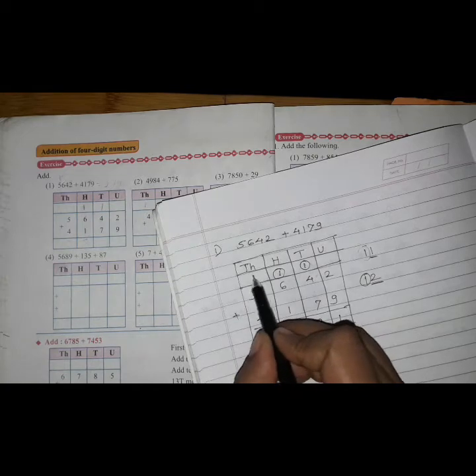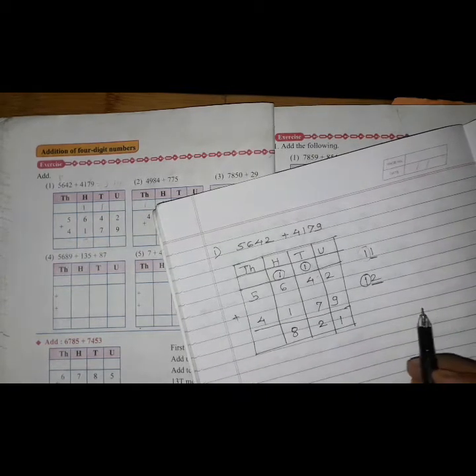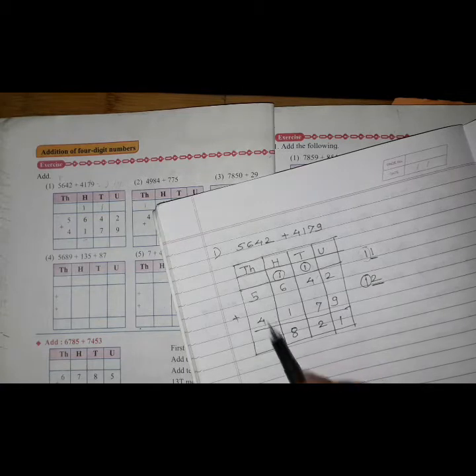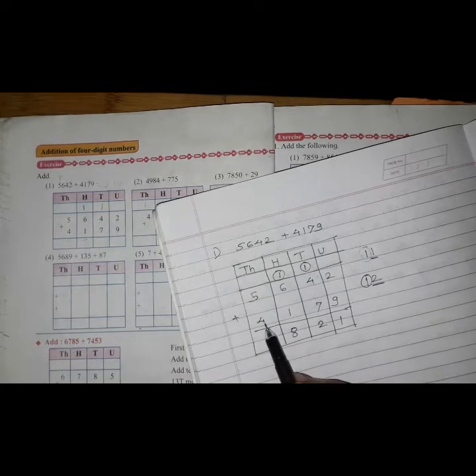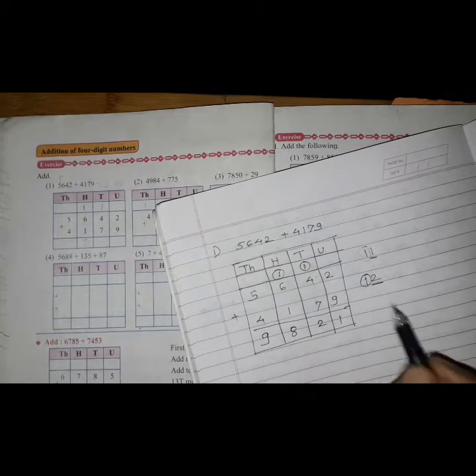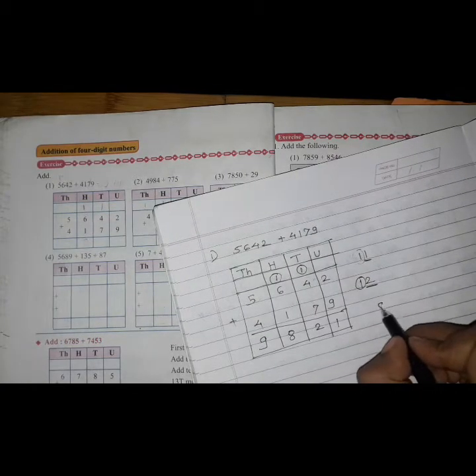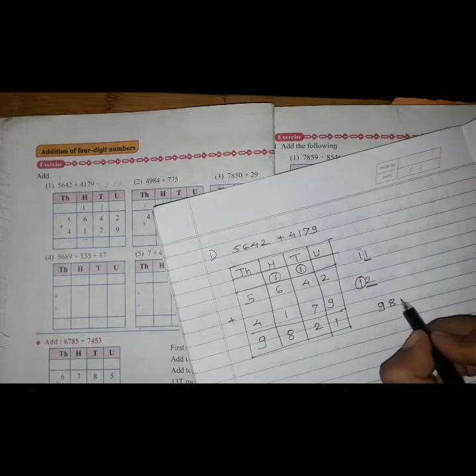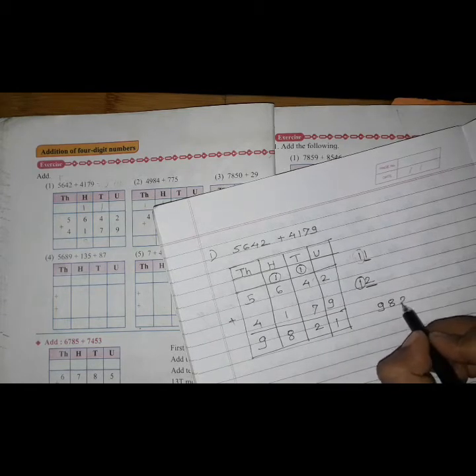In the thousands place there are only 2 numbers: 5000 and 4000. 5 plus 4 is 9. So the answer is 9821.